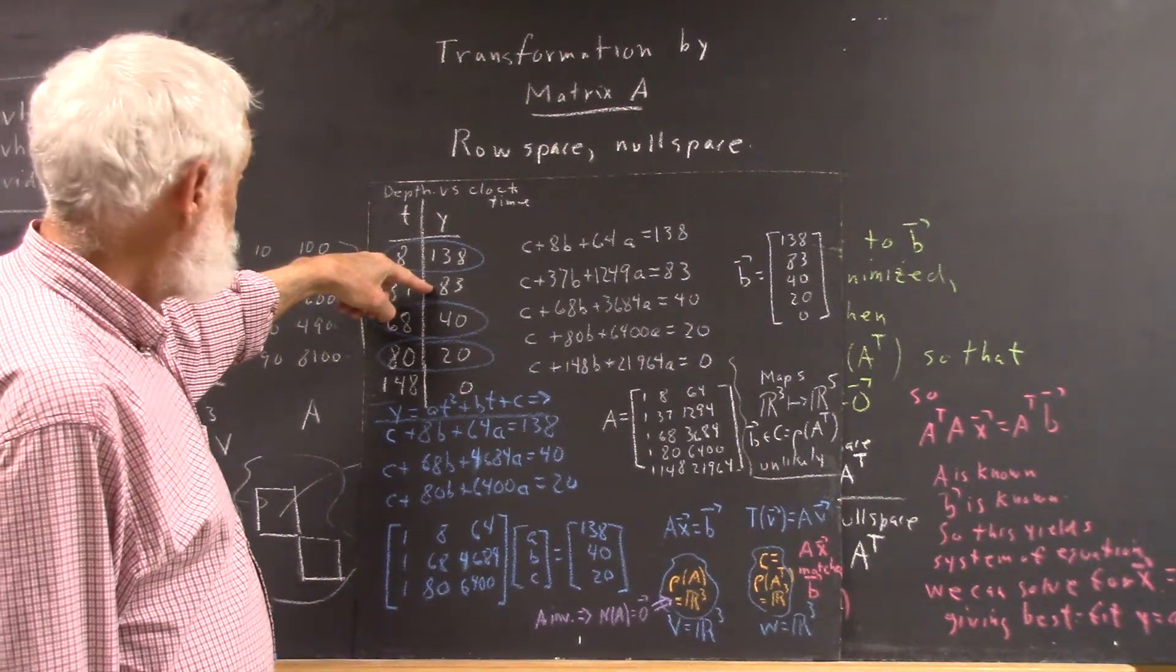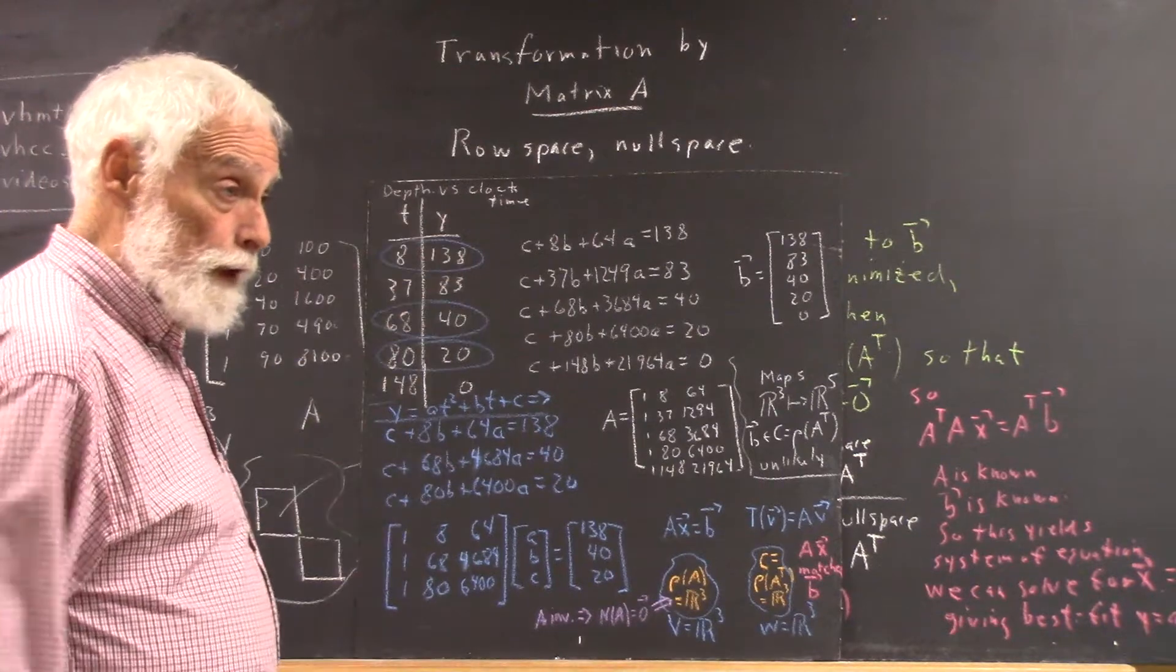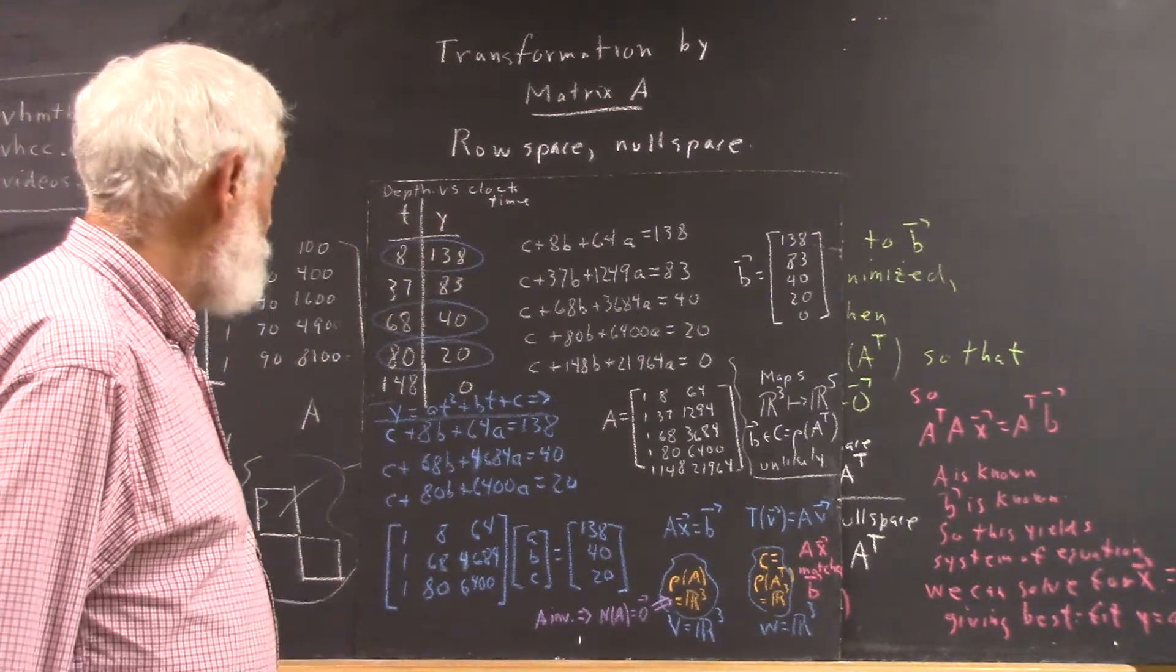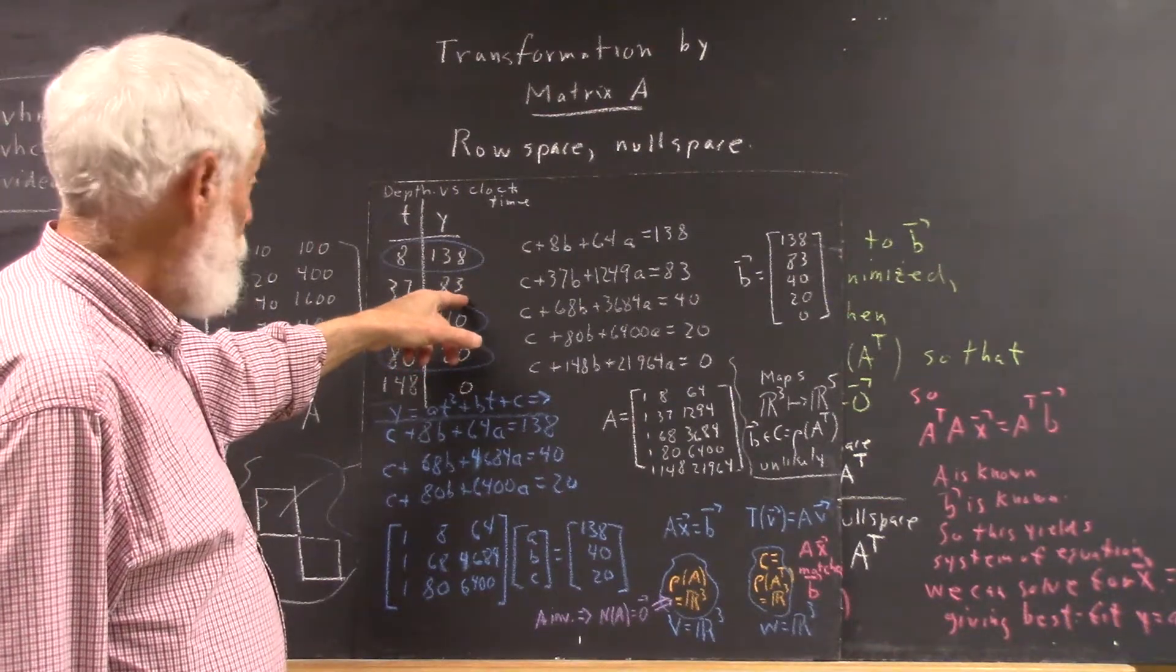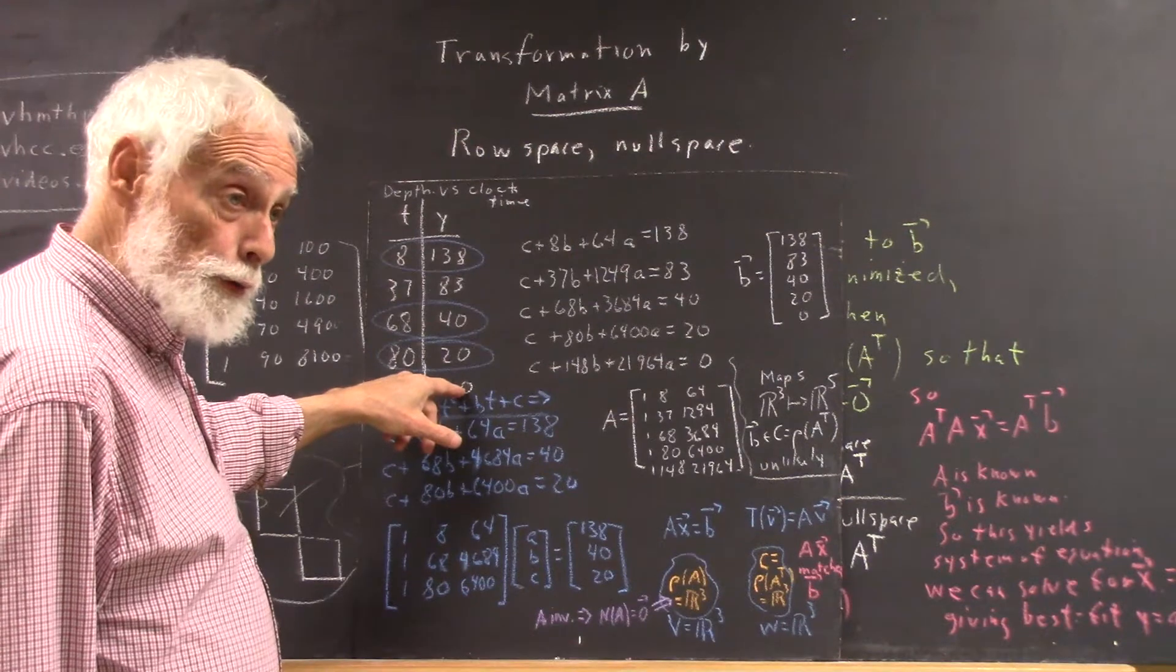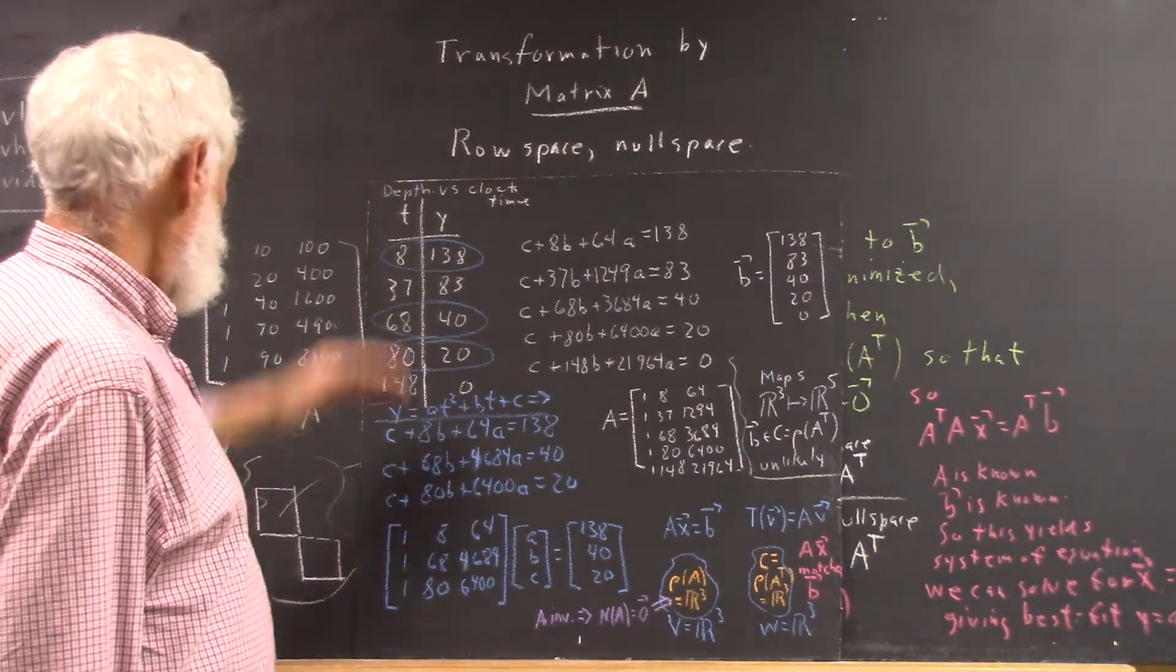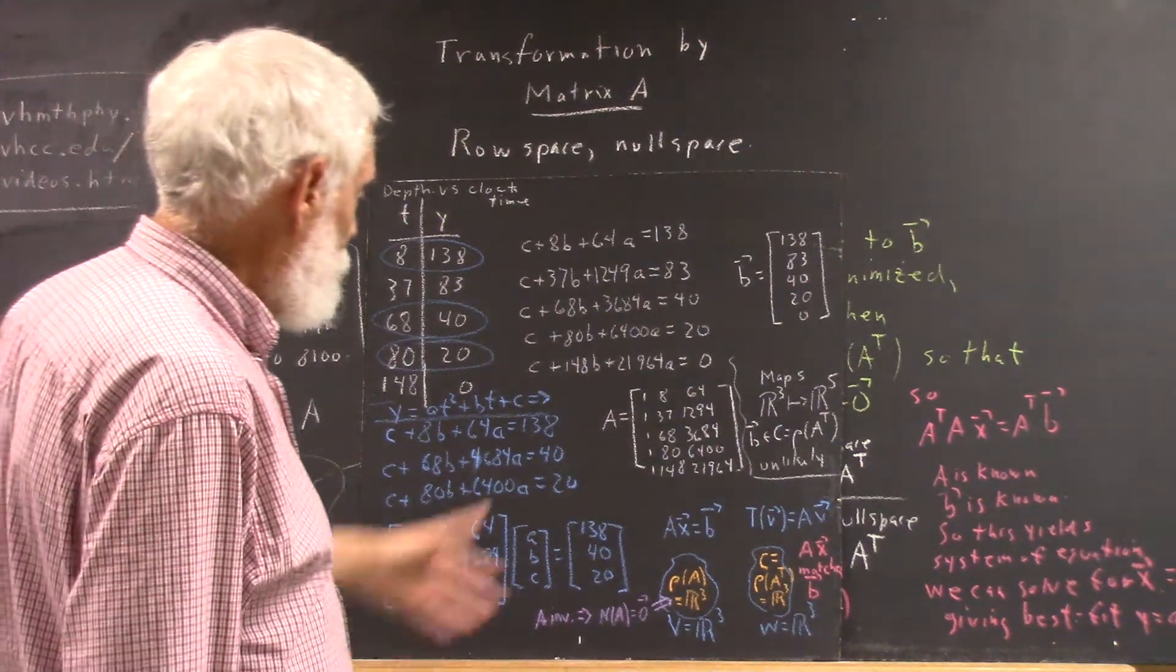Now if we plug 37 into the function, we don't expect to get exactly 83, but if the depth really is a quadratic function of clock time and our data is accurate, then we expect what we get would be pretty close to 83. What we get when we plug in 148 should be pretty close to zero. So that's our quadratic model.